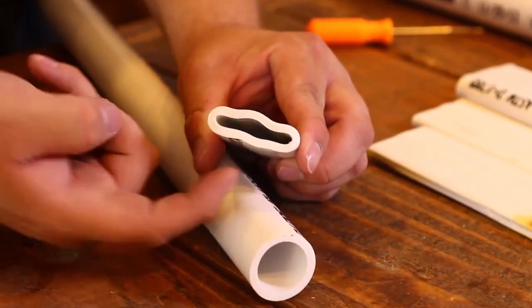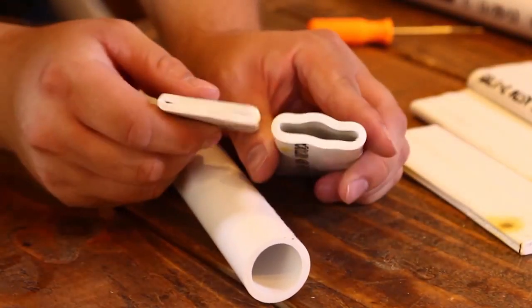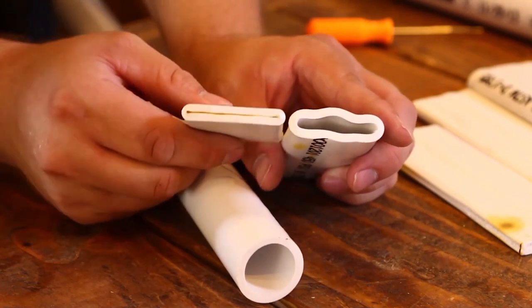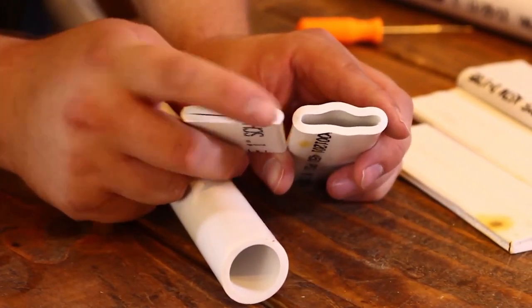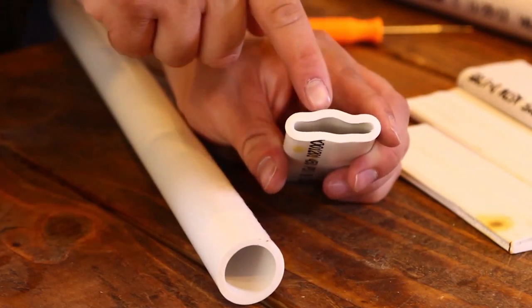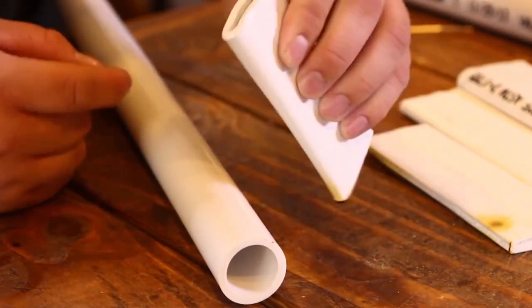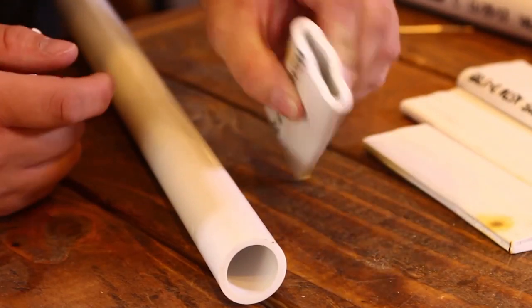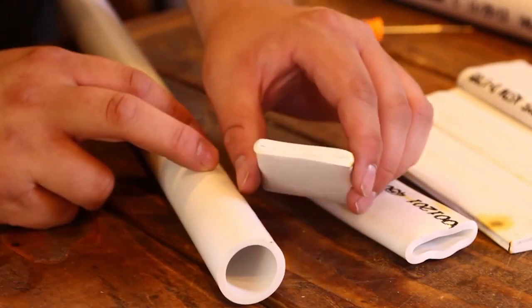When you start to squish it down, you can see how the outer edges have kind of squished down like they should. Like here's a really good—here's my good example of what it should look like. You can see this one's nice and evenly squished down, whereas this one still has a little bit of a curve in the middle of both sides, and that's not what you want.